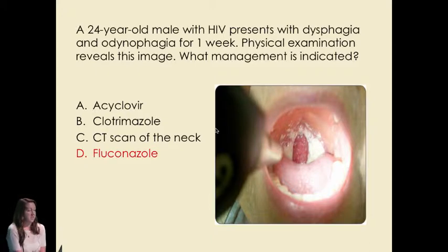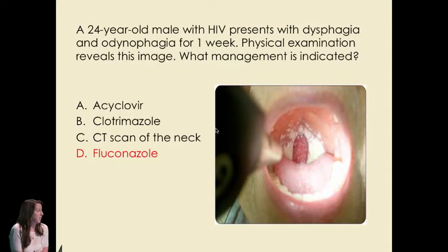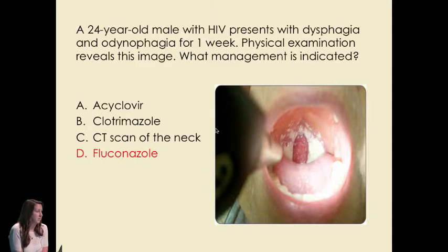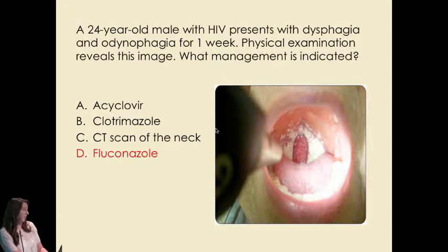The treatment is fluconazole. For an immunocompromised patient, you're going to want to treat for 14 to 21 days. If the patient is really ill and can't tolerate PO, you want to admit them and give IV fluconazole. For immunocompetent patients with mild cases, you can give clotrimazole troches or have them do nystatin mouth washes.